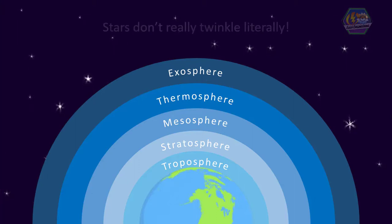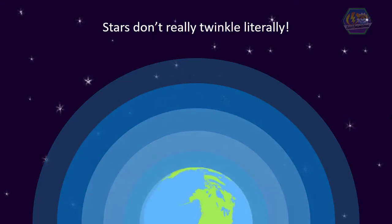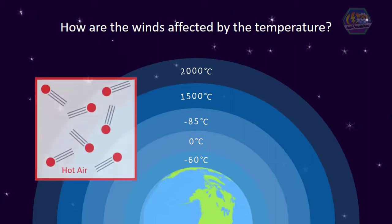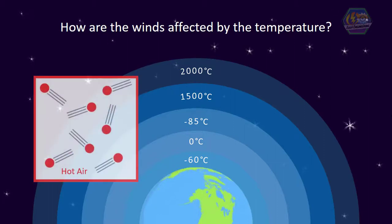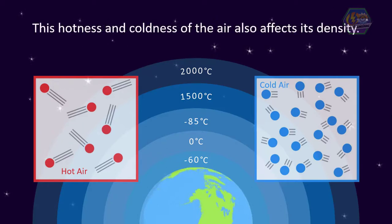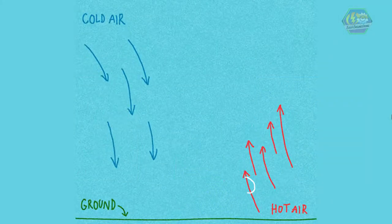Well, stars don't really twinkle literally — they just appear that way if you're looking from the surface of the earth. Because of our atmosphere, when starlight enters our atmosphere it is affected by winds and by areas with different temperatures and densities. When the air is hot, it has a lot of energy and loves to move around. This hotness and coldness of the air also affects its density — always remember this: hot air always rises and cold air sinks.